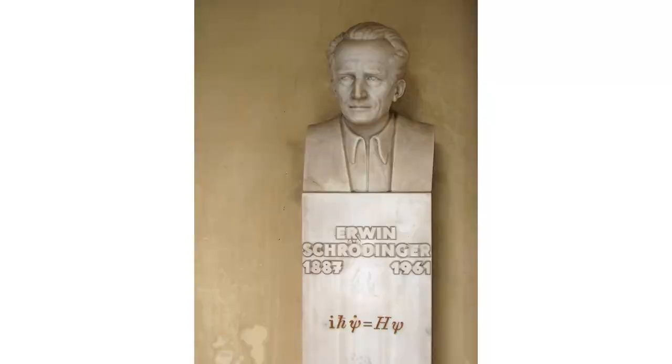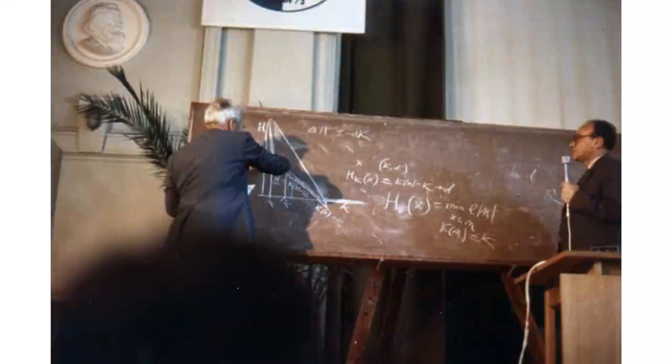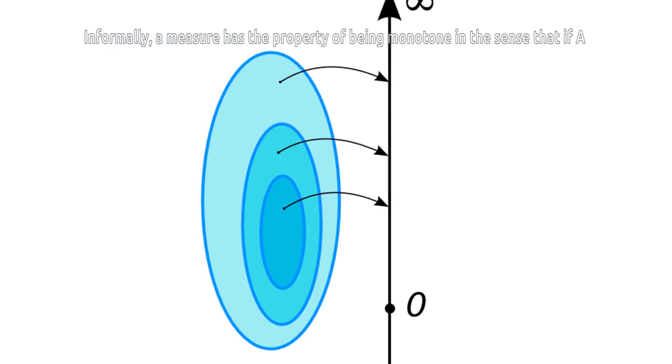In the 1930s, probability theory was put on an axiomatic basis by Andrei Kolmogorov, using measure theory. Since the 1960s, following the work of Arthur Wightman and Rudolf Haag, modern quantum field theory can also be considered close to an axiomatic description.